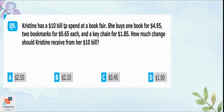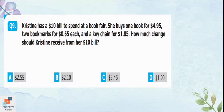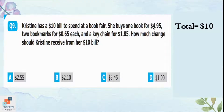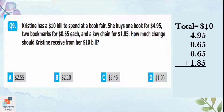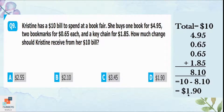Question 9: Christine has a $10 bill. She buys one book for $4.95, two bookmarks for $0.65 each, and a keychain for $1.85. Adding all amounts: $4.95 plus $0.65 plus $0.65 plus $1.85 equals $8.10. Subtracting from $10 gives $1.90 in change. That is option D.